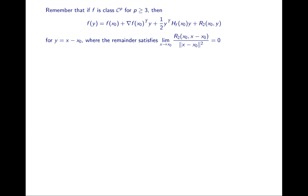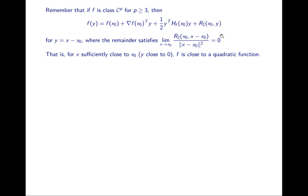If f is class Cp where p ≥ 3, then we can express f as a quadratic function plus a remainder — the remainder of the second-order Taylor expansion. If y is sufficiently small — that is, x is close to x0 — then this remainder term is small, meaning f(x) is close to a quadratic function near x0.